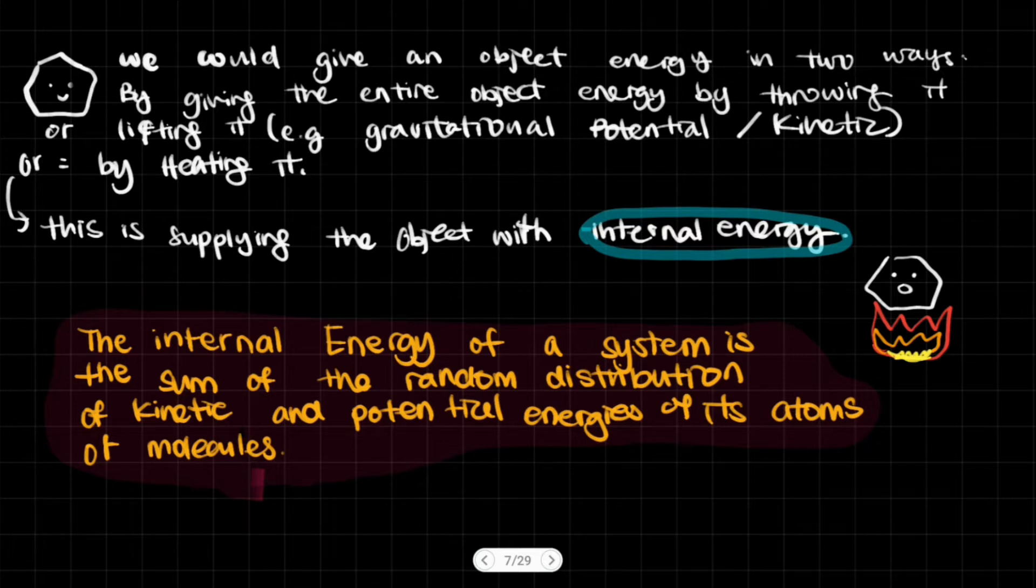We can take a look at this little rock, and let's say this is the object in question. To get an idea of what internal energy is, we could give an object energy in two ways. For example, we could throw the entire rock right here, and we could also lift it up from the surface of the earth. This will give it gravitational potential energy or kinetic energy.